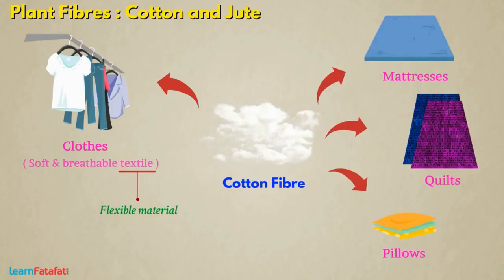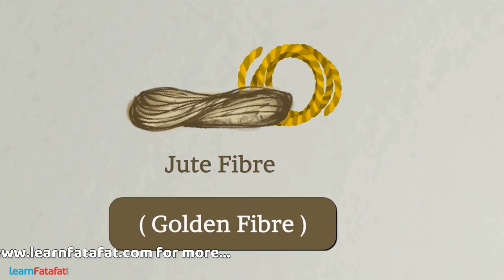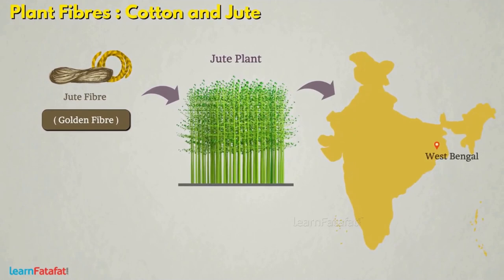Jute fiber is a soft and long natural fiber. As it has a golden and silky shine, it is also called golden fiber. It is obtained from the jute plant. Jute plants are grown mainly in the fields of West Bengal, Bihar and Assam.